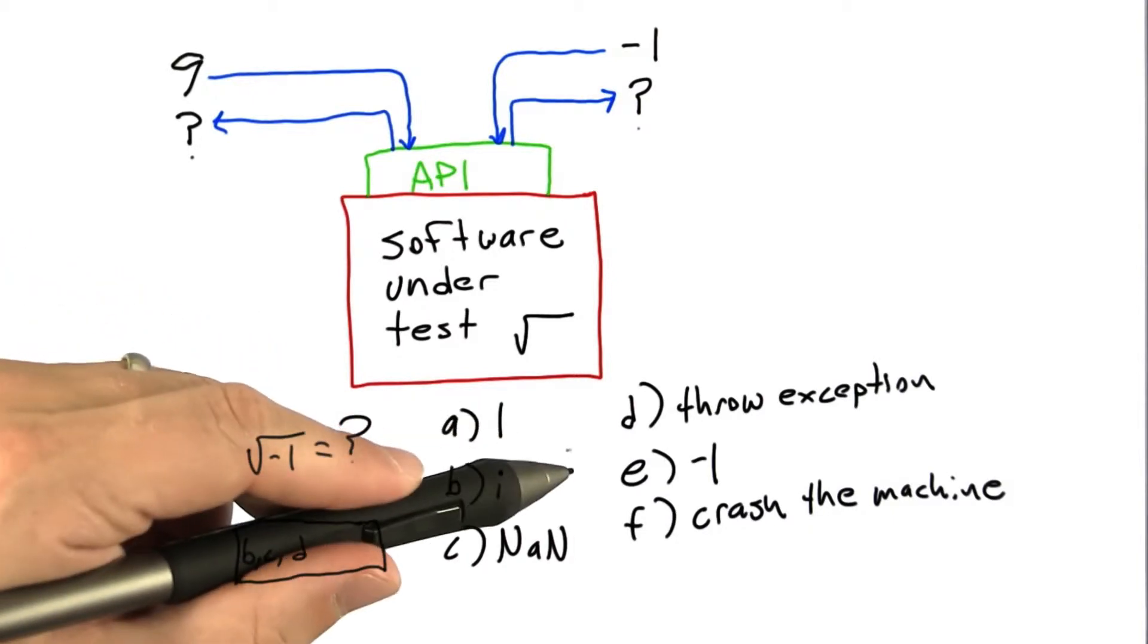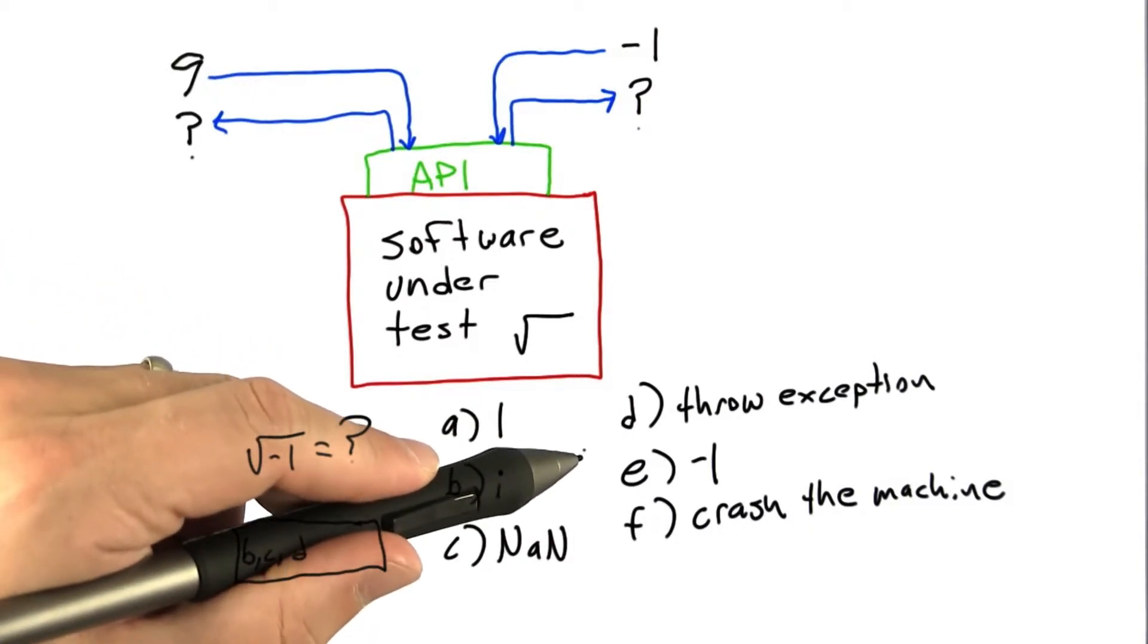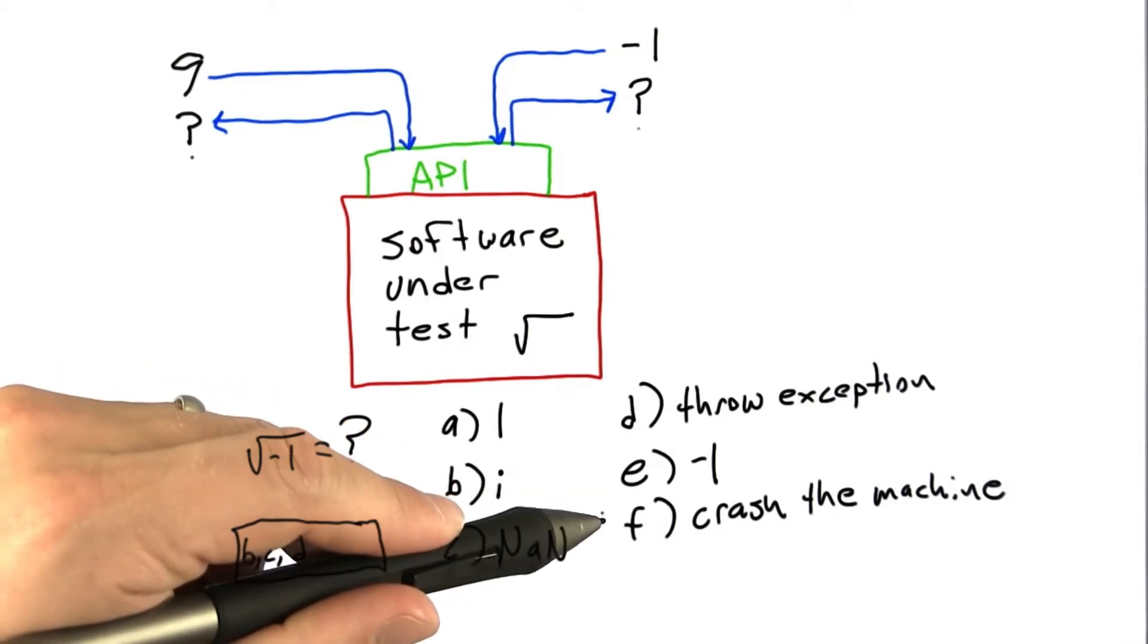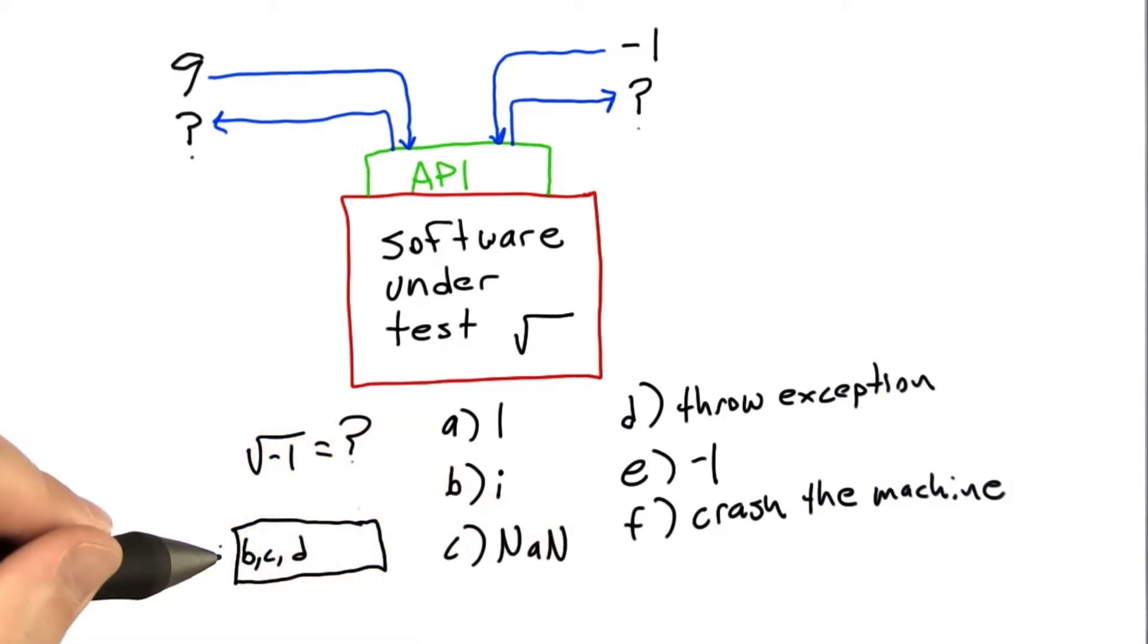E is not a good answer. Minus 1 can never be the square root of minus 1. And crashing the machine is probably never a good response. So the answer is some combination of B, C, and D.